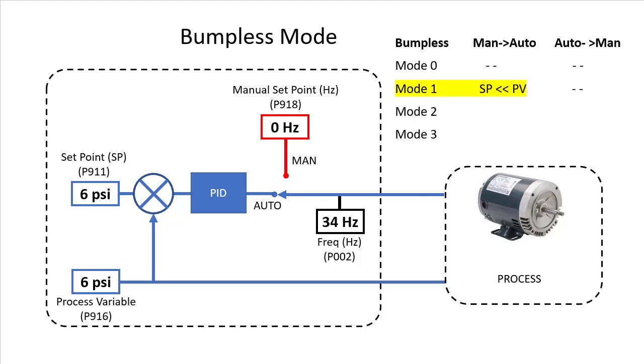Bumpless mode 1 is what we just described. The set point is set equal to the process variable upon enabling PID to prevent PID from possibly driving the motor straight to full speed.